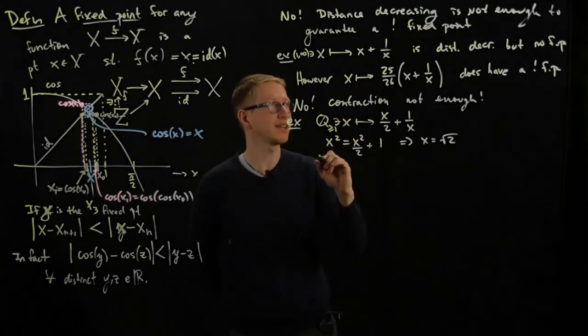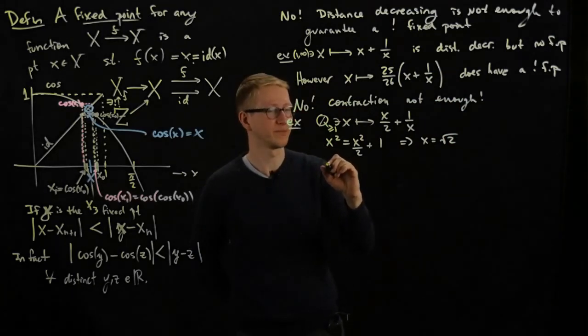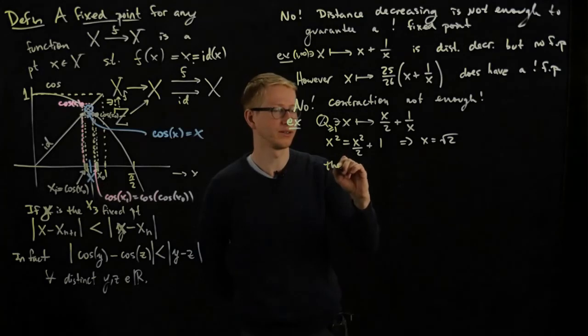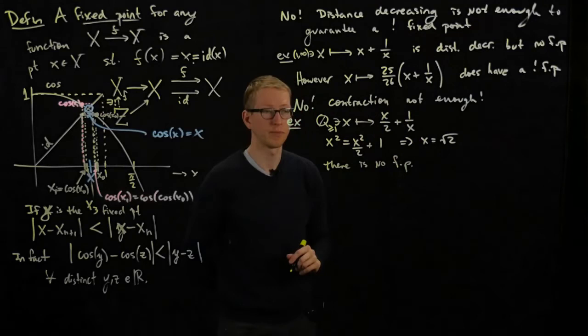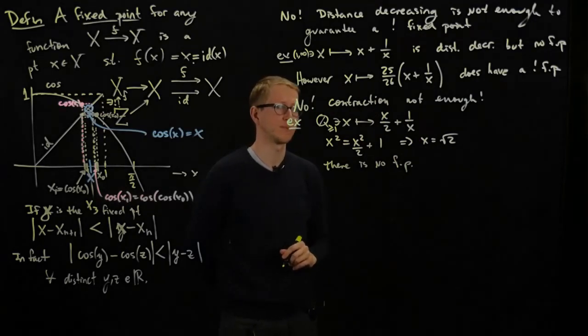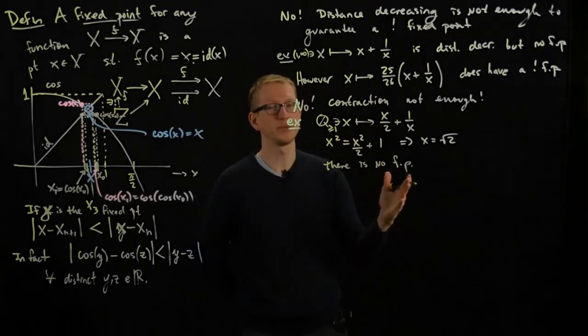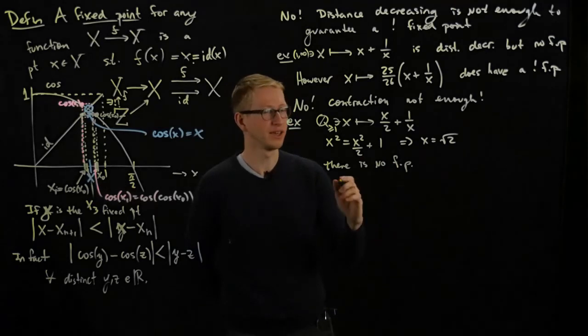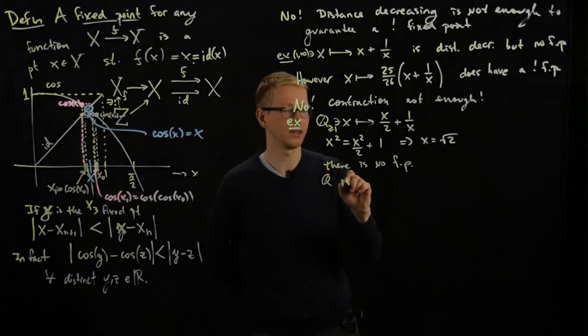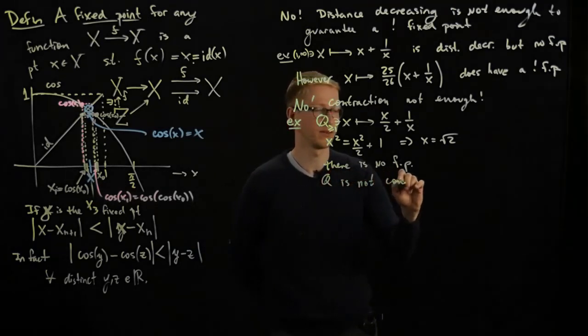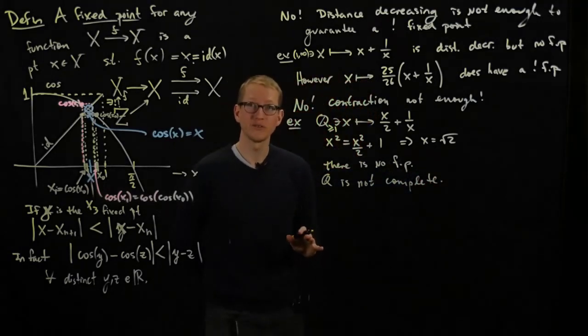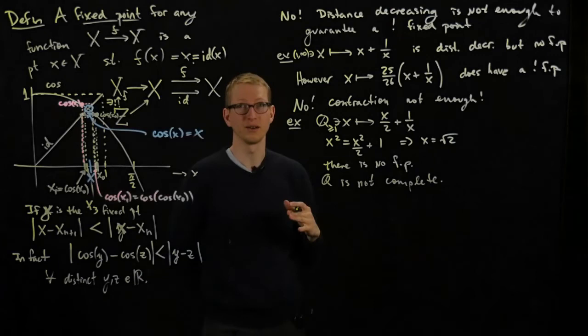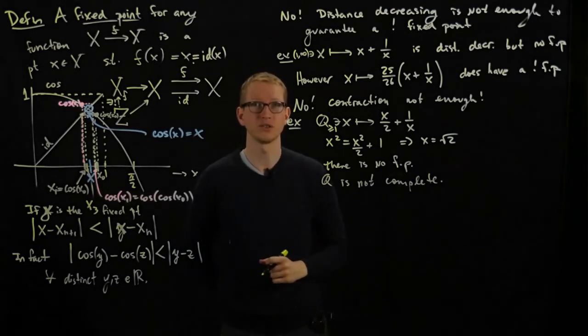And this, of course, is a fixed point, but it's not a rational number. So technically, there is no fixed point, even though it's a contraction, as you can check. And the problem here is a little bit obvious. It's because Q is not complete. Okay, fine. So we've gone through a bunch of examples that are counterexamples to possible conjectures that we might make.